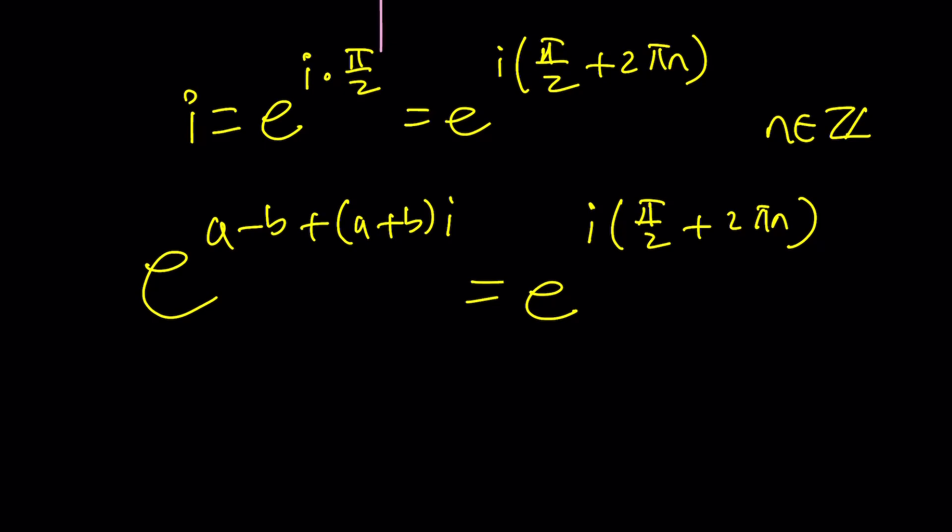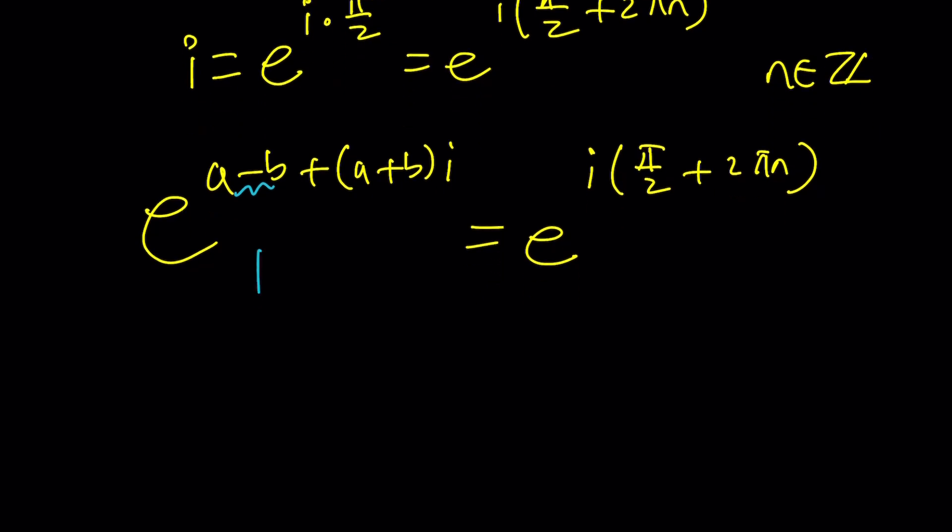But wait a minute on the right hand side I have e to the power i times something so it's kind of like imaginary no real part right you see that. On the left hand side the same thing should happen so I should not have a real part and obviously when you separate this number you can definitely do that right.